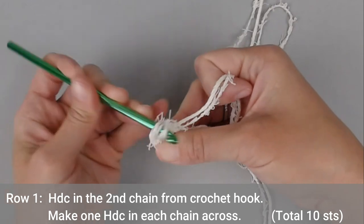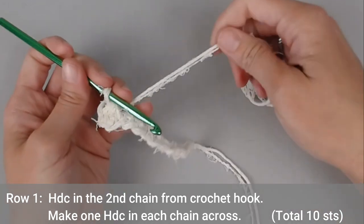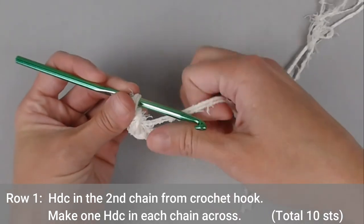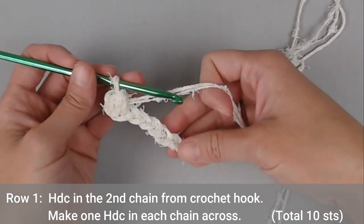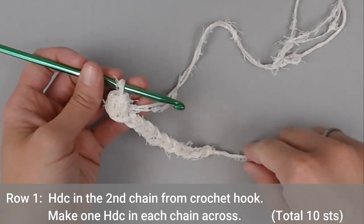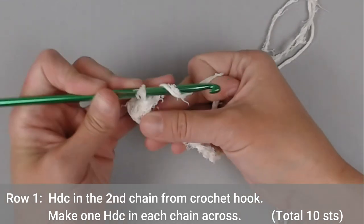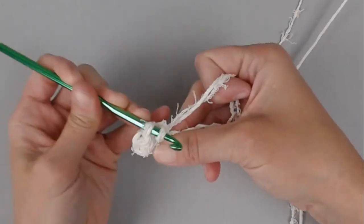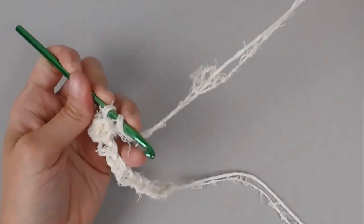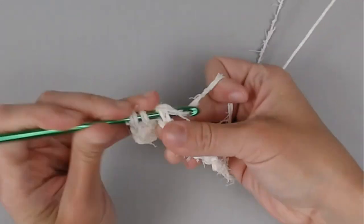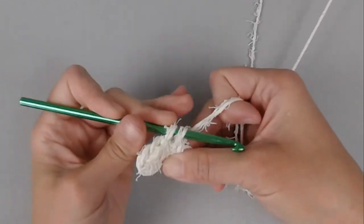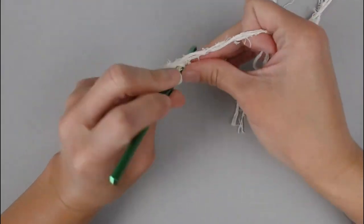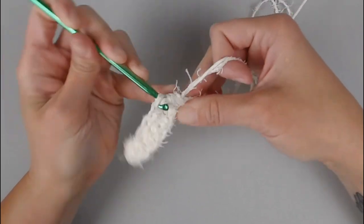If you need to go slow and make your way through the stitch, it's totally fine. The grab of the scrubby yarn can cause more friction, so just take your time with it. You will make one half double crochet in each chain all the way across. You will end row 1 with a total of 10 half double crochet stitches.